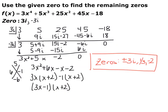Factoring 3x squared plus 5x minus 2 gives (3x minus 1)(x plus 2). So the full set of zeros is: plus and minus 3i from the original given root and its conjugate, and then 1/3 and negative 2 from the factored quadratic. This polynomial had two complex conjugate solutions and two rational real solutions.